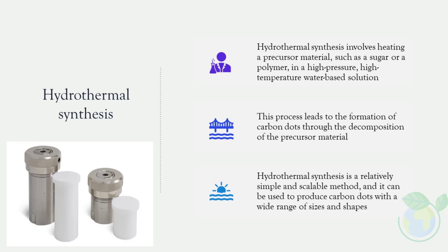Hydrothermal synthesis involves heating a precursor material, such as a sugar or a polymer, in a high-pressure, high-temperature water-based solution. This process leads to the formation of carbon dots through the decomposition of the precursor material. Hydrothermal synthesis is a relatively simple and scalable method, and it can be used to produce carbon dots with a wide range of sizes and shapes.